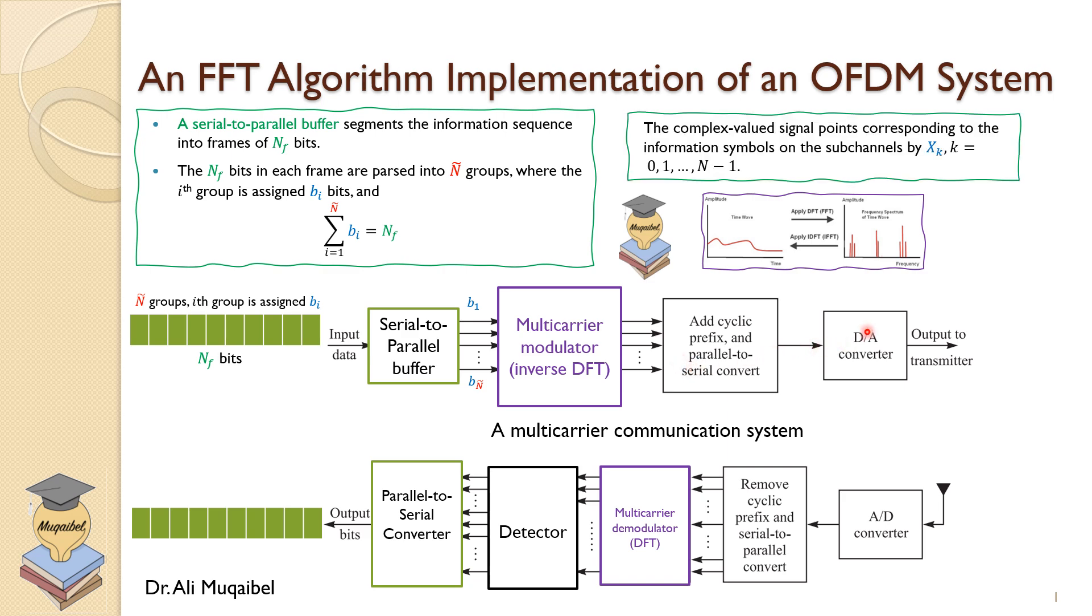We have digital-to-analog converter. At the output we have the opposite. So to modulate the subcarriers by information symbols, which is X, we employ the inverse discrete Fourier transform.